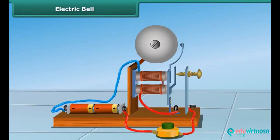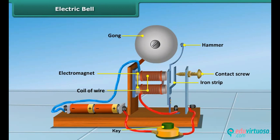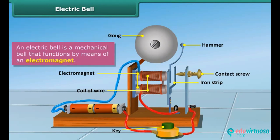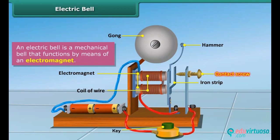Let us now look at the working of an electric bell. It functions by means of an electromagnet. The electric bell consists of a coil of wire wound on an iron piece. The coil acts as an electromagnet. An iron strip with a hammer at one end is kept close to the electromagnet. There is a contact screw near the iron strip. When the iron strip is in contact with the screw, the current flows through the coil, turning it into an electromagnet.